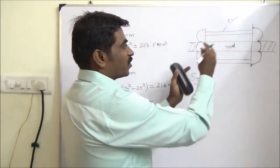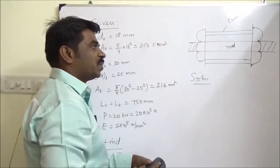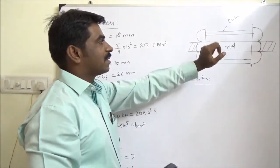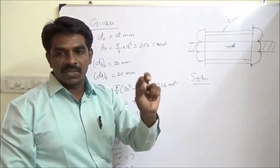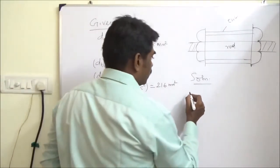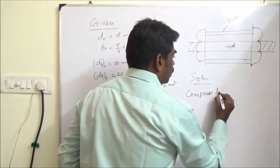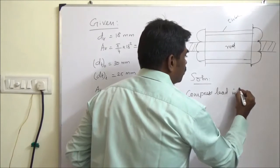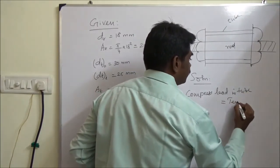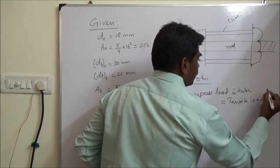Let us first discuss the first part where the forces are equal. Whenever it is subjected to the force, the tube will be subjected to compressive and the rod will be subjected to tensile. So compressive load in tube is equal to tensile load in rod.